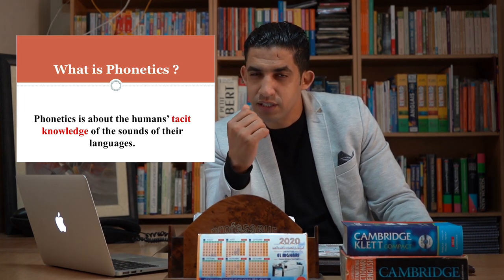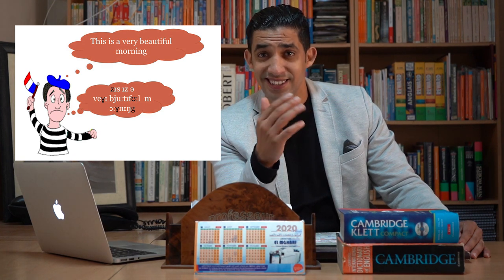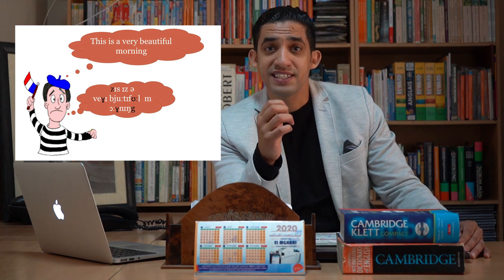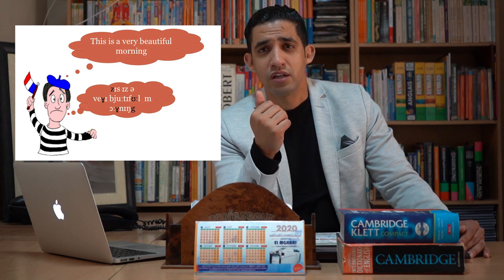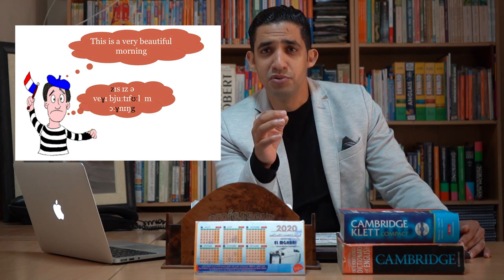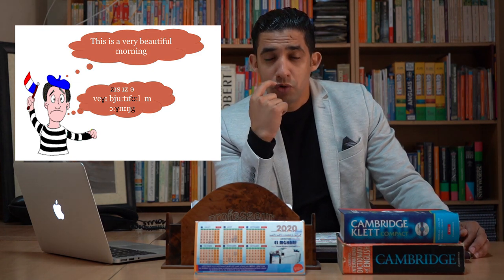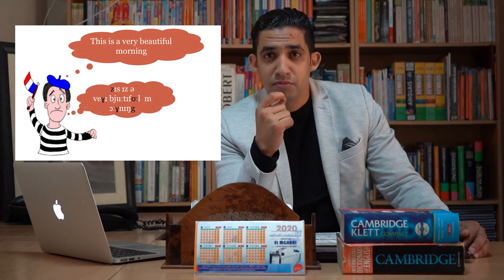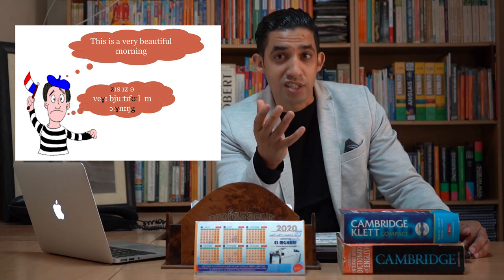For example, French speakers of English often pronounce words like 'this' and 'that' as if they were spelled 'dis' and 'dat.' Imagine a French speaker wanting to say 'this is a very beautiful morning' — they will say 'dis is a very beautiful morning.' This shows that the English sounds represented by the initial letters 'th' are not part of the French sound system.